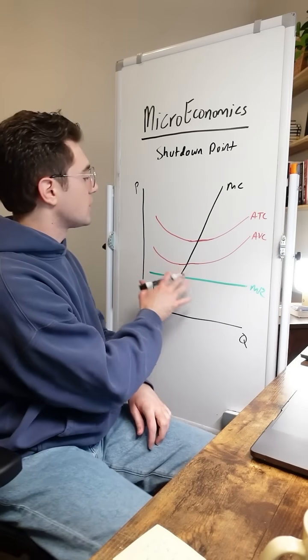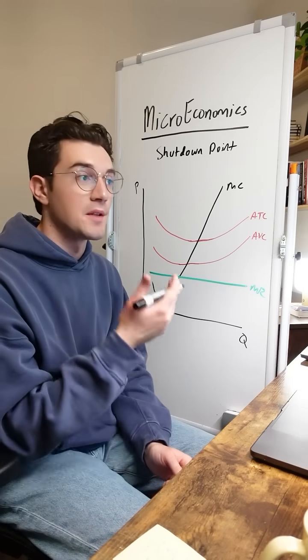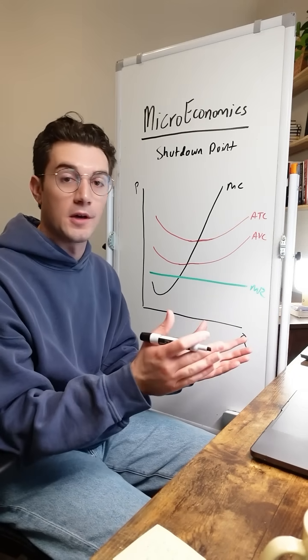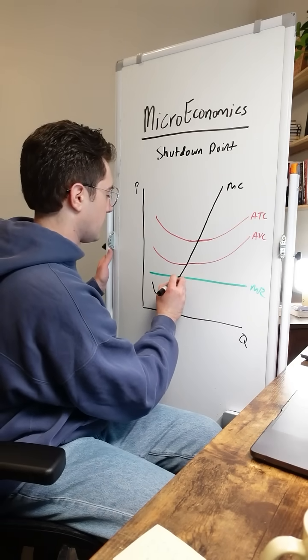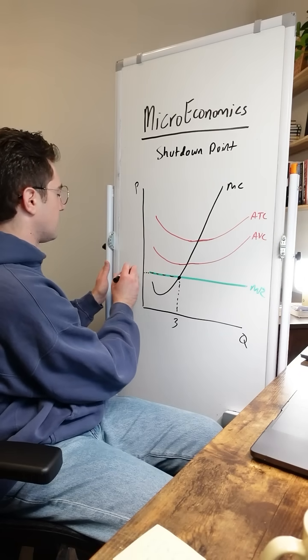Now with that being said, we first got to pinpoint here the MR equals MC point. That's the profit maximizing point that this firm should produce at no matter what. That occurs right here, and we'll say that's at three units of output, and they're selling them at a price of two bucks.